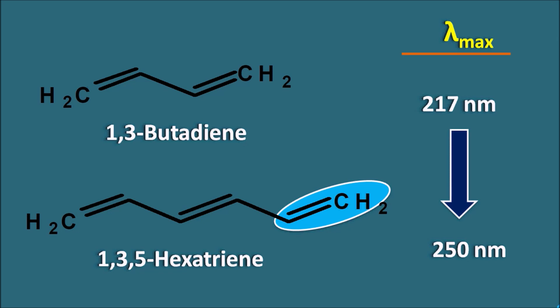The increase in lambda max is because of the introduction of a new double bond within the structure. Butadiene has two double bonds but hexatriene has three double bonds, and this double bond is in a conjugated arrangement. So extended conjugation can be observed in 1,3,5-hexatriene, and by this the lambda max value is going to be increased.